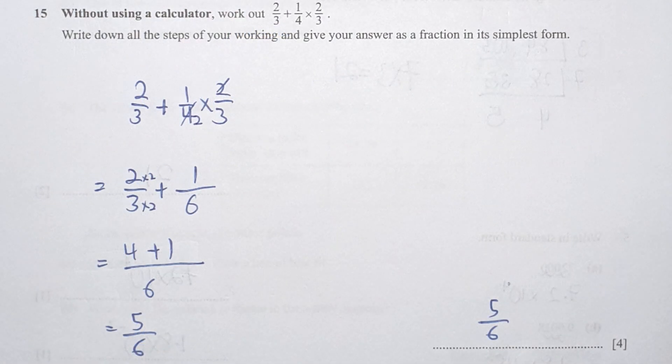For question 15, I run the calculation on 1 over 4 times 2 over 3 first and get a balance of 1 over 6. From there, I change the denominator into the same by multiplying 2 into the numerator and denominator of the first fraction, then I get my final result as 5 over 6.